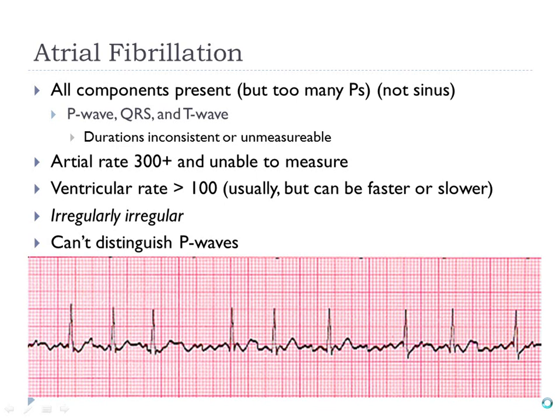Another thing that is unique about AFib is that you cannot identify the P waves — it just looks like a bunch of junk. You can't really tell what's going on with the P waves. That's why we call it AFib: the atria are fibrillating, just quivering, not really doing much at all.